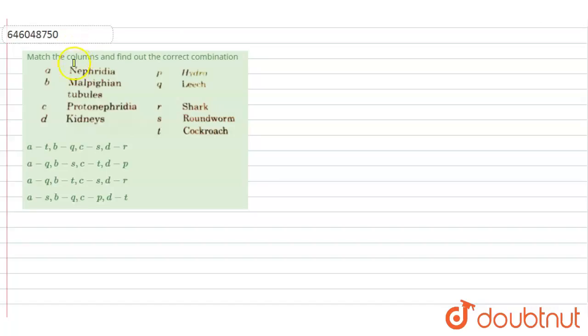The question is match the columns and find out the correct combination. We are having different excretory organs in column one and different organisms in column two. We have to find out which excretory organ corresponds with which organism. Column one is nephridia, Malpighian tubules, protonephridia, kidneys. Column two is hydra, leech, shark, roundworm, cockroach.